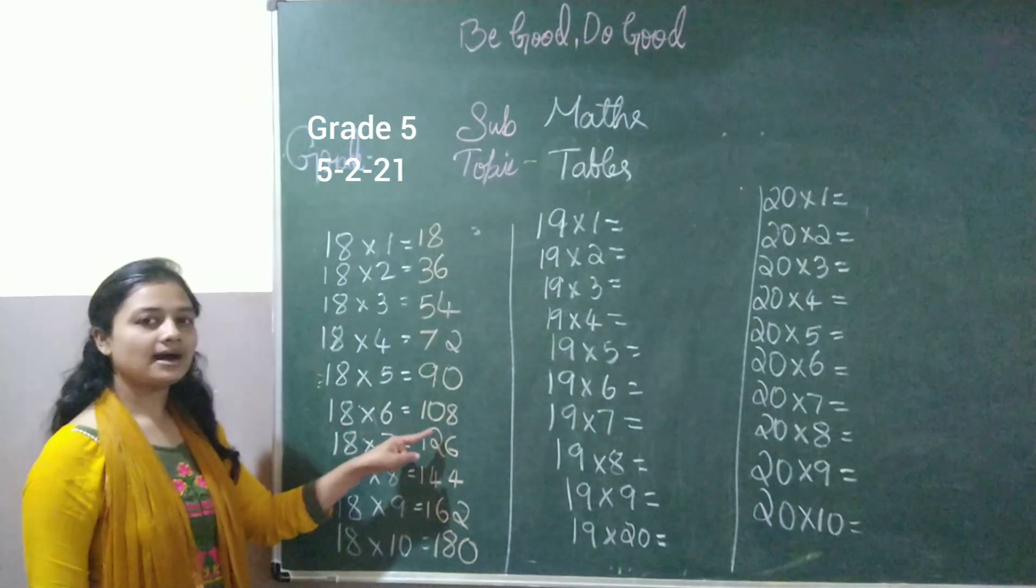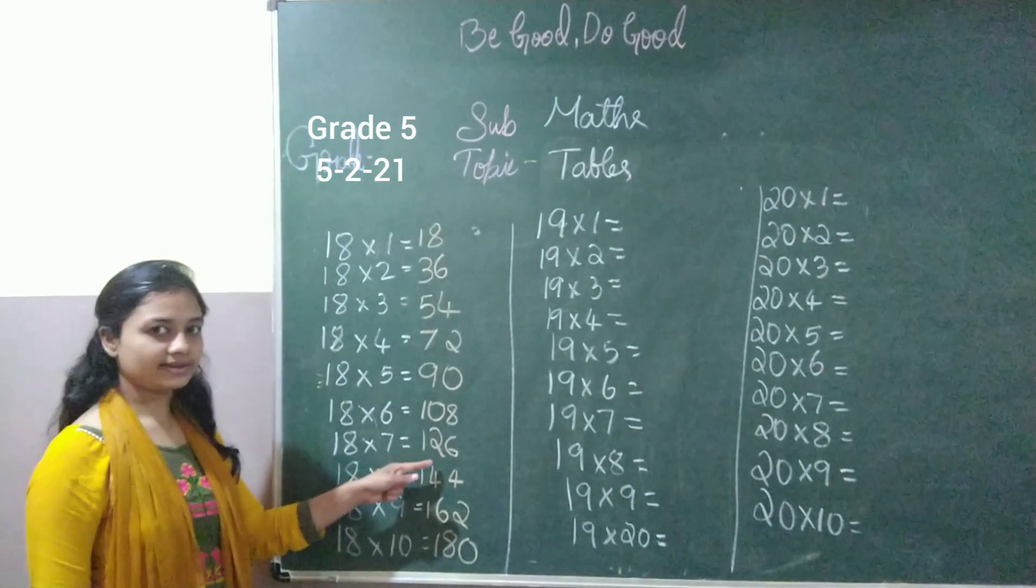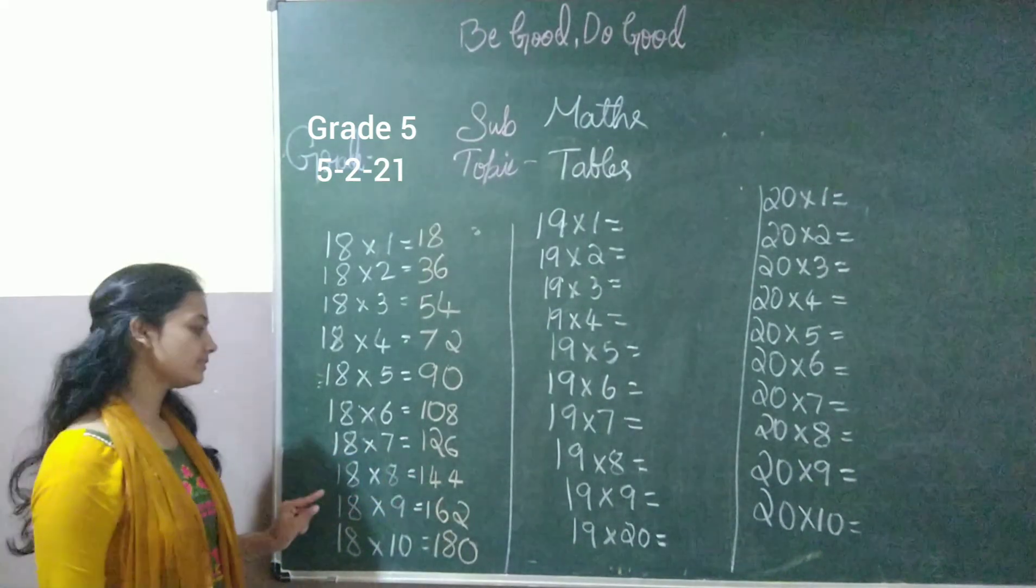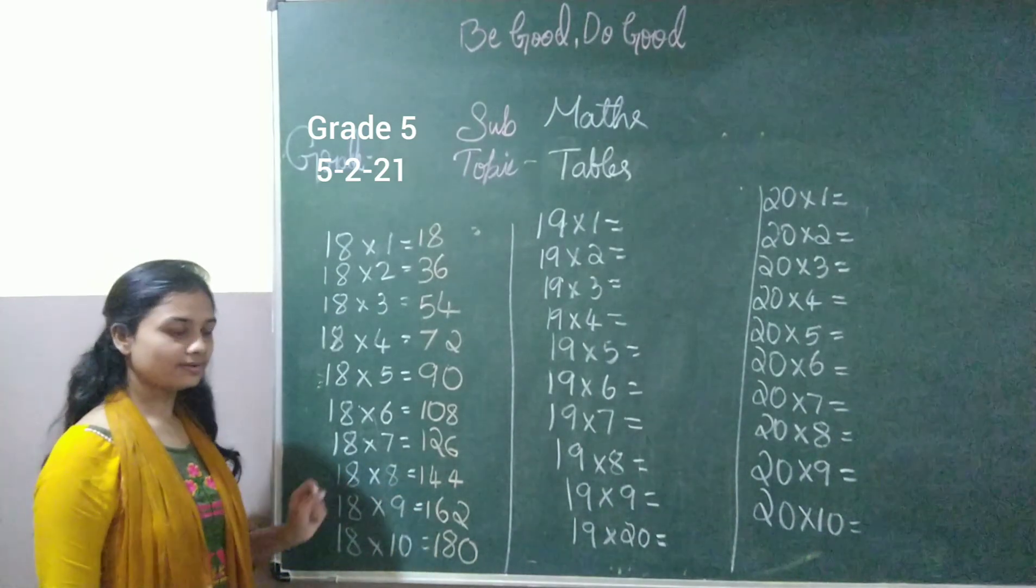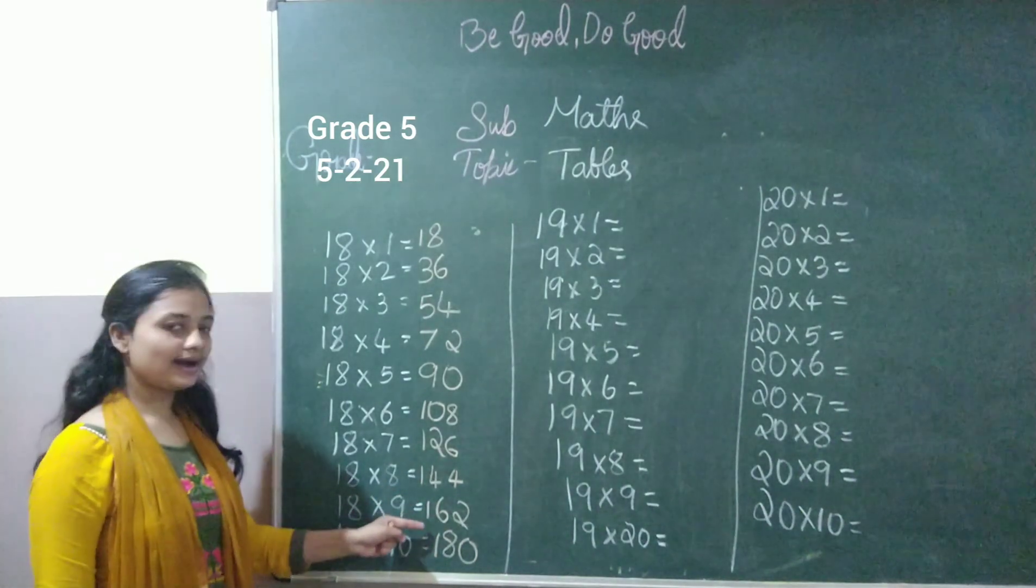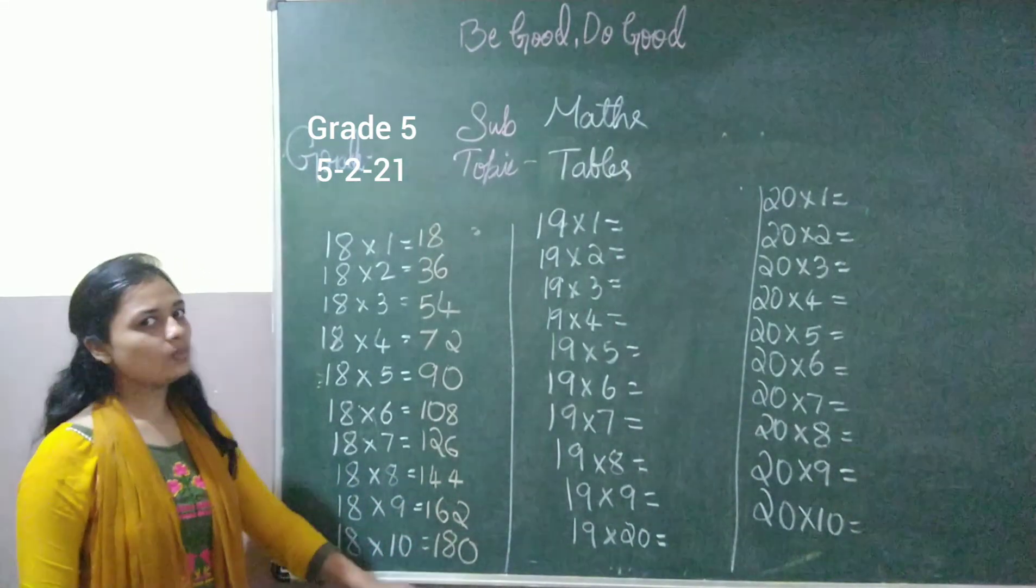18 times 6 is 108. 18 times 7 is 126. 18 times 8 is 144. 18 times 9 is 162. 18 times 10 is 180. So you've got easy writing and reading tables.